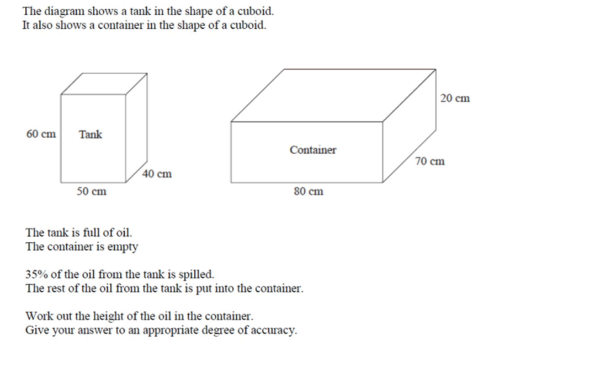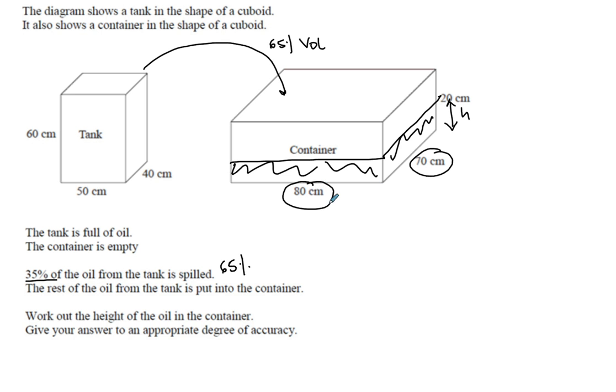The diagram shows a tank in the shape of a cuboid. The tank is full of oil. So it's full. The container is empty. Thirty five percent of the oil from the tank is spilled. So we know we've only got sixty five percent left. The rest of the oil is put into the container. So sixty five percent of the volume. Work out the height of the oil in the container. So again, we can draw it. It makes it easier. So that will all go in there. And we have to find the height. What won't change? That won't change. And that won't change. So at some stage we're going to be dividing by that.